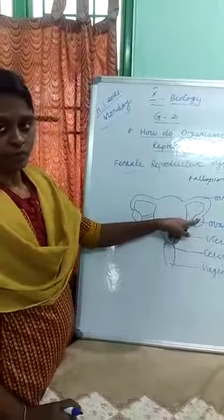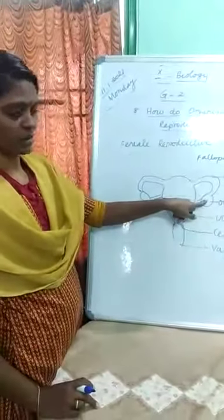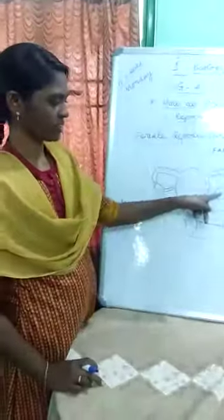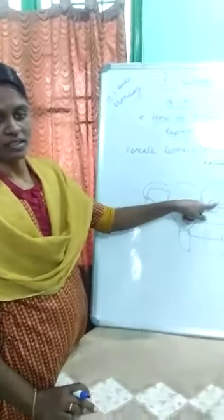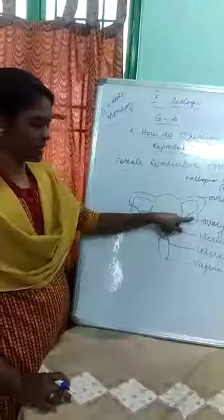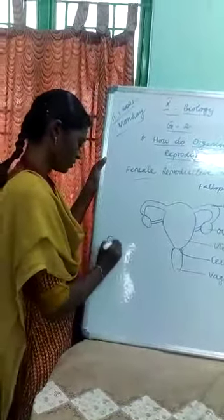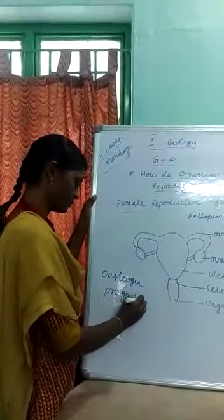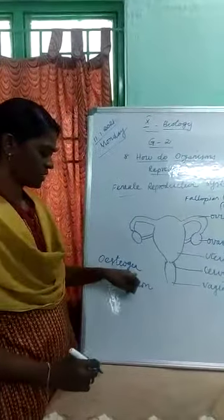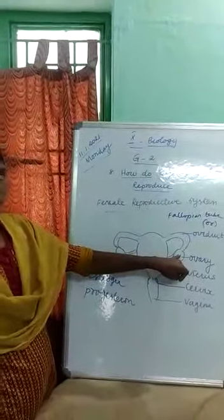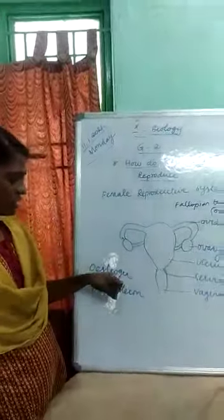Now we have to see the function of each part. Ovary — write it as a heading. The ovary is the primary sex organ of the female. Two ovaries are present. Ovaries produce ovum, which is the female gamete. They also produce the female sex hormones named estrogen and progesterone.